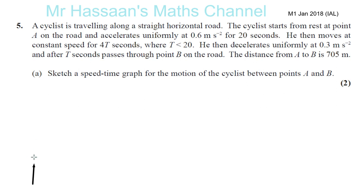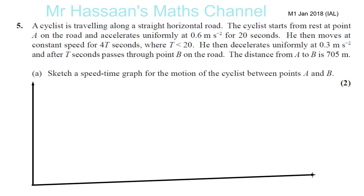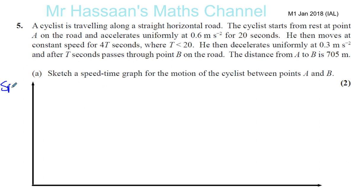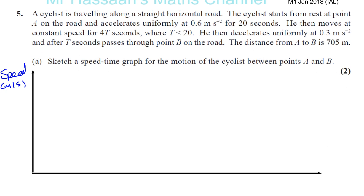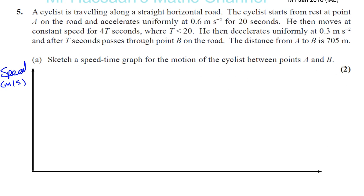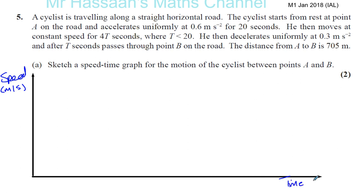So let's make our pair of axes — speed in meters per second on the vertical axis, and time in seconds on the horizontal axis. The cyclist starts from rest at point A, so he starts from the origin. He accelerates uniformly at 0.6 meters per second squared for the first 20 seconds, so we can work out what speed he reaches.